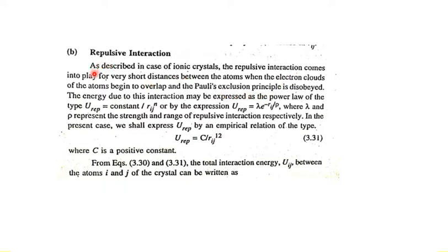Now let us consider the repulsive interaction. As described in the case of ionic crystals, the repulsive interaction comes into play for very short distances between the atoms, when the electron clouds of the atoms begin to overlap and Pauli's exclusion principle is violated. When two ions are very close, the electron cloud of one overlaps with that of the other; electrons repel each other, causing a repulsive interaction that changes the energy.